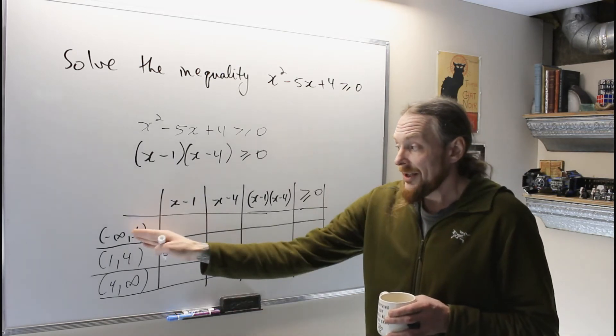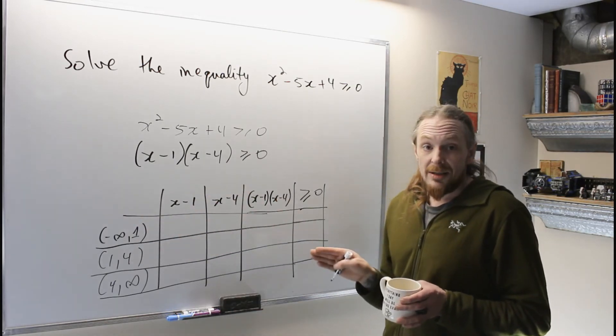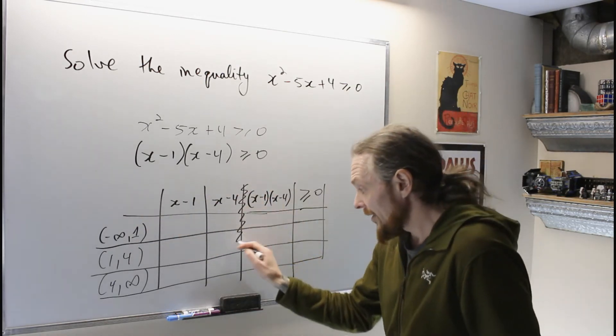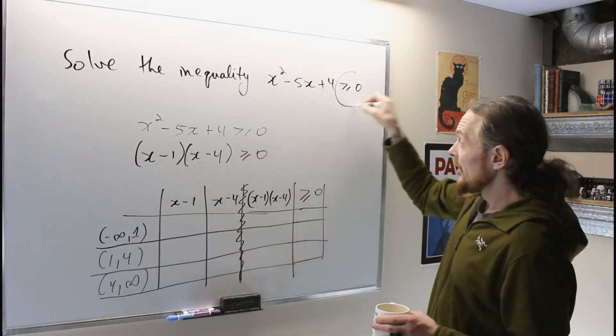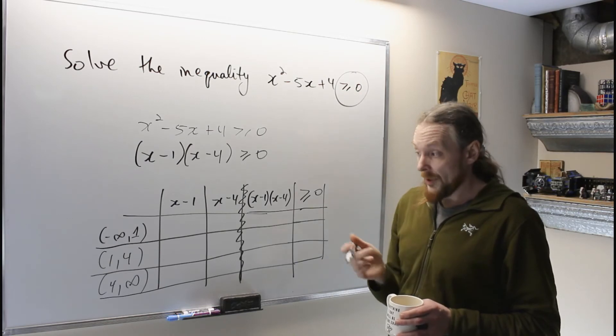And now what we're going to do is, on each interval, find out if these pieces are positive or negative, and then we'll multiply them together and put them in here and then check to see what we wanted. And we want greater than 0 or equal.